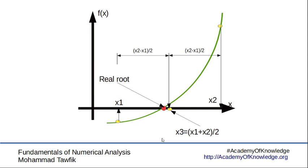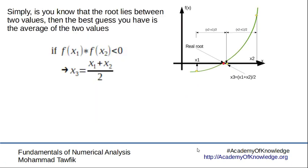Now let's write it a little bit more formally. If the root lies between x1 and x2, then our best guess would be x3, where x3 is x1 plus x2 over 2.